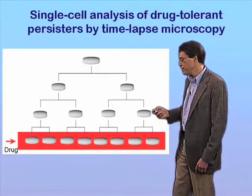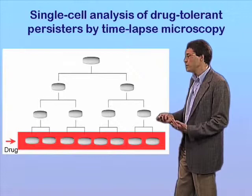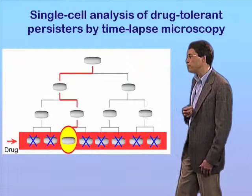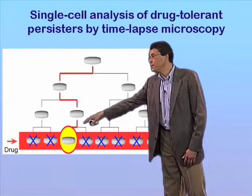We then expose them to the drug for whatever period of time we desire, which of course leads to the death of most of the cells, with the exception of the rare persisters. But then we can readily identify these persisters as cells that fail to lyse and which recover growth after we wash out the drug. And now we have a complete record through time of the behavior of these cells and their ancestors.